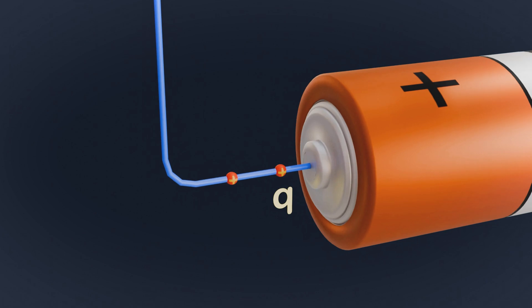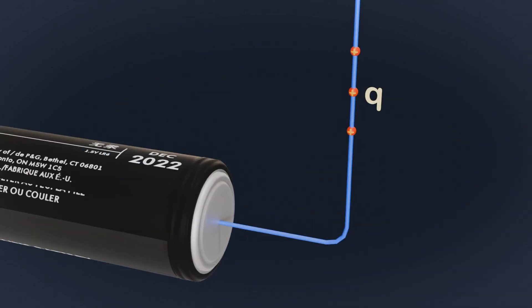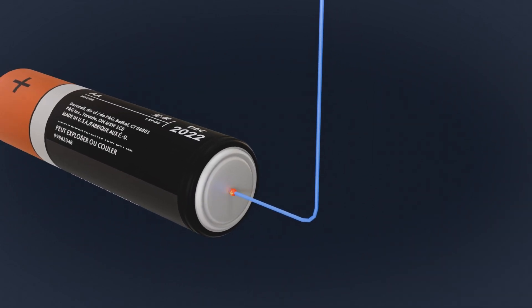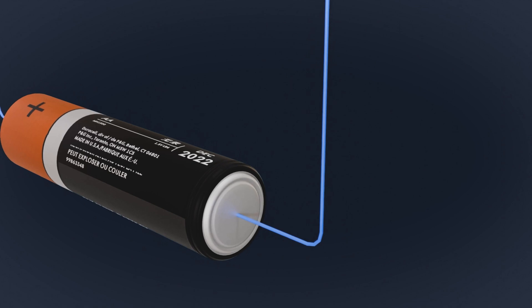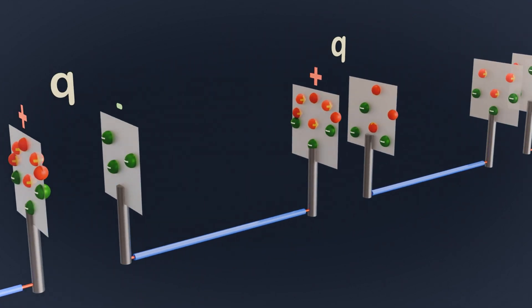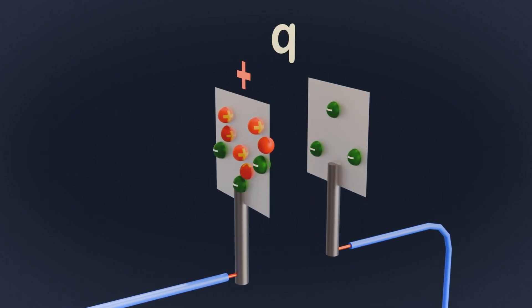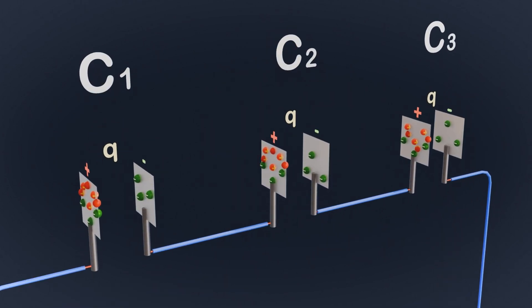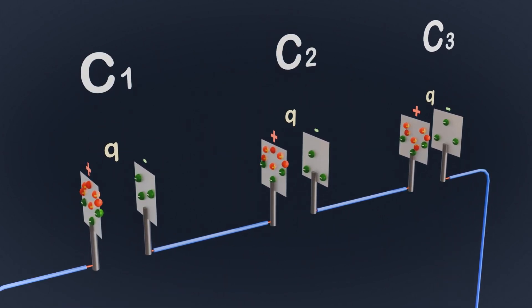The same charge that the battery supplied from the positive end now reaches the negative end, maintaining a continuous flow of charge. This unique charge transfer mechanism ensures that all capacitors in a series combination have the same charge Q, which is a key property of series circuits.